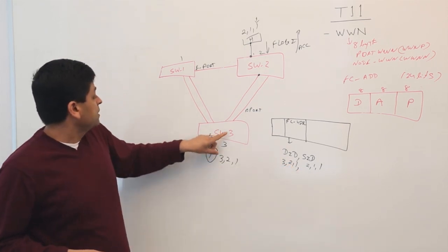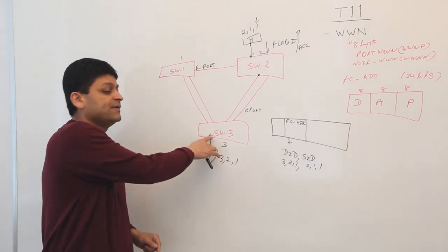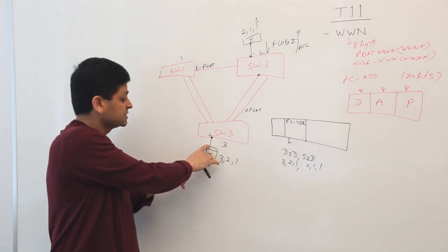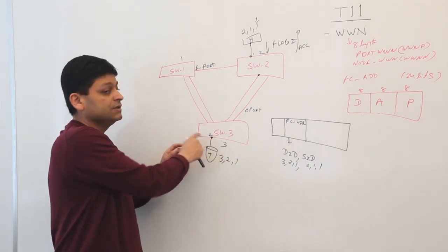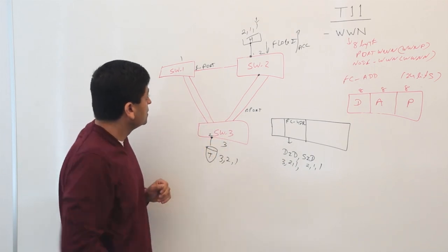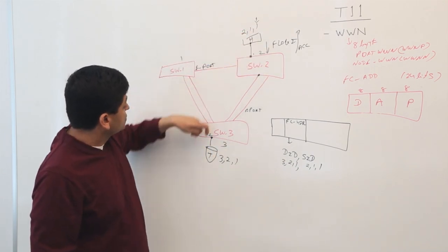So he will say, okay, what is the area? Remember what I said was, when he did the fabric login, he got the address of 2. He said, oh, it's supposed to go on port 2 and frames will go out here. So this is how the frames will traverse.